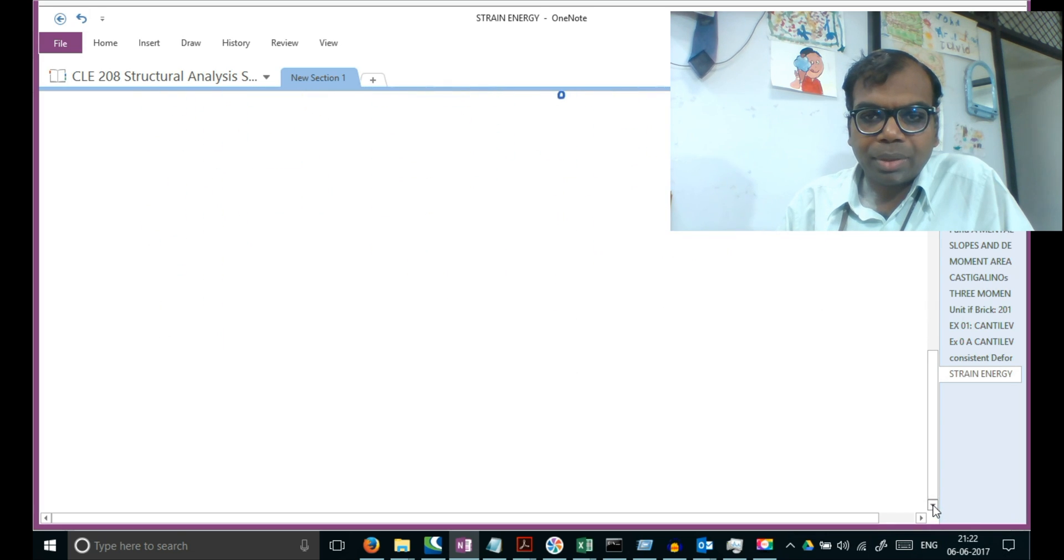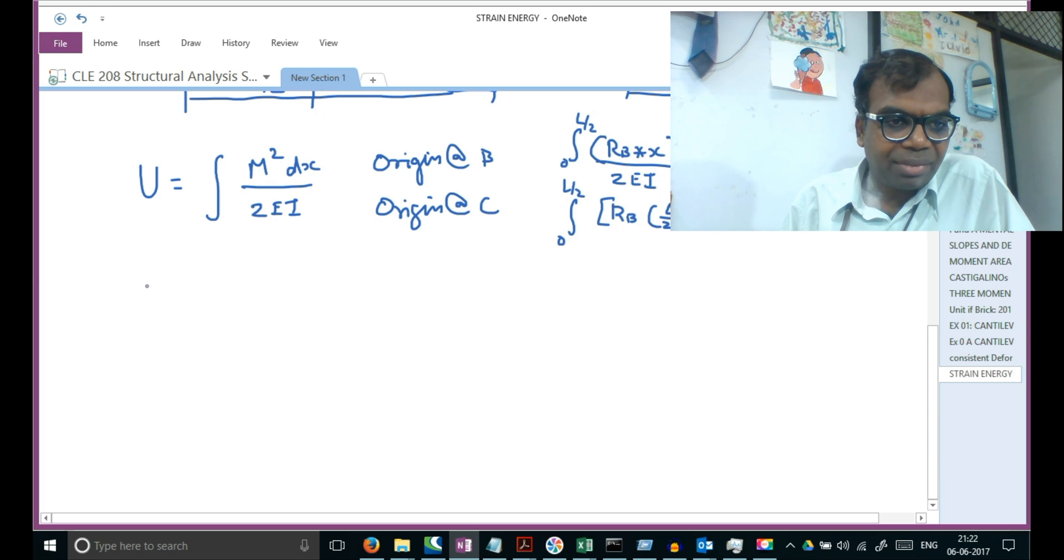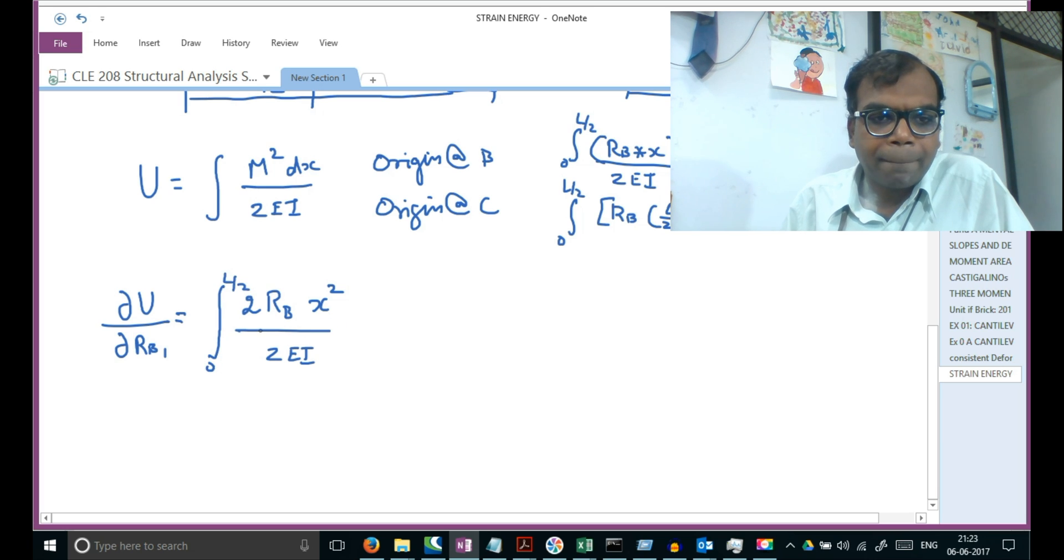Before we go ahead, remember we need to make the energy minimum, so I'm differentiating this with reference to RB, the redundant reaction. This equals the integral of the summation of both terms. I'll do the partial differential of the first term - this will make it easier. For the term with origin at B, which I'm calling 1, it's RB whole square, so this reduces to 2 times RB into X squared by 2EI.